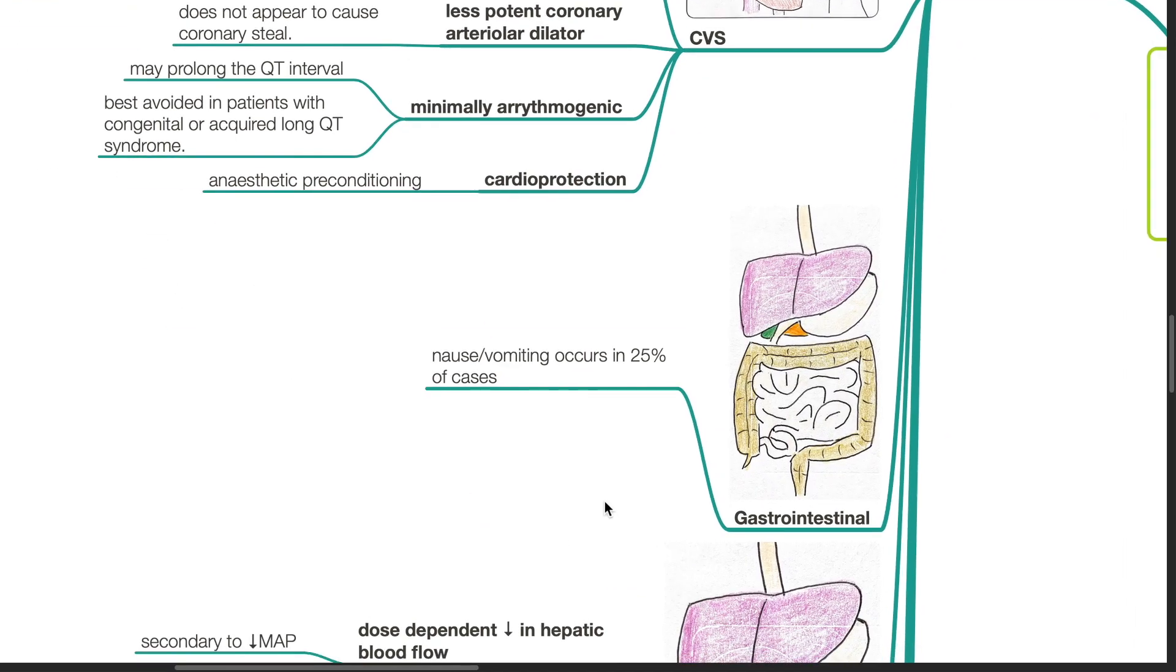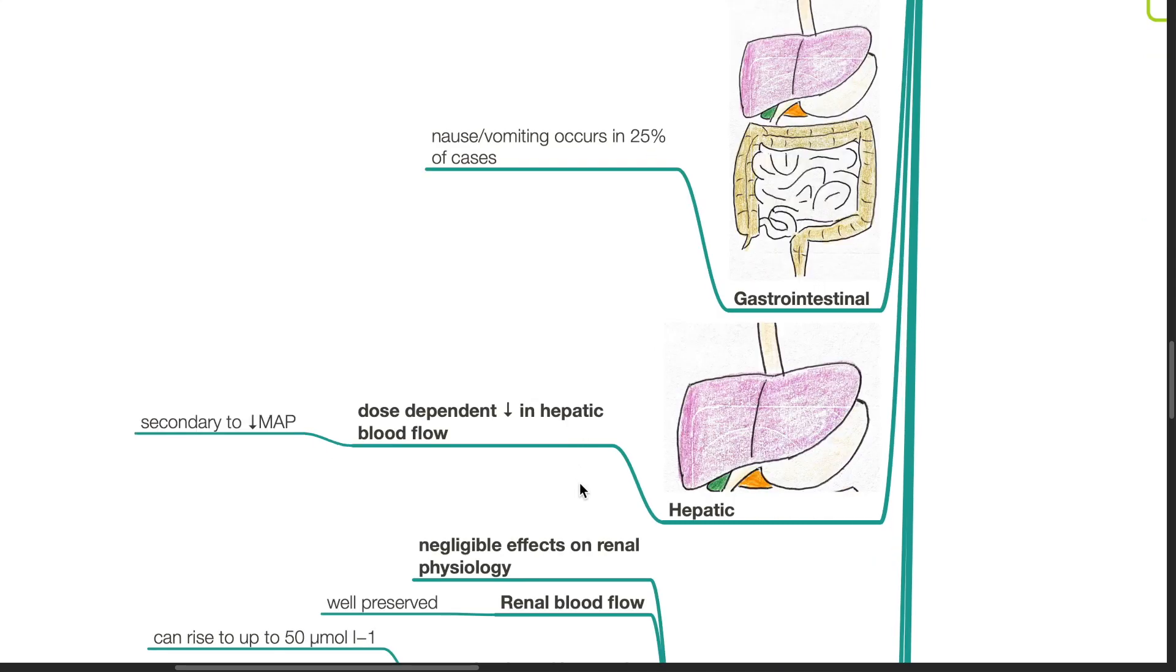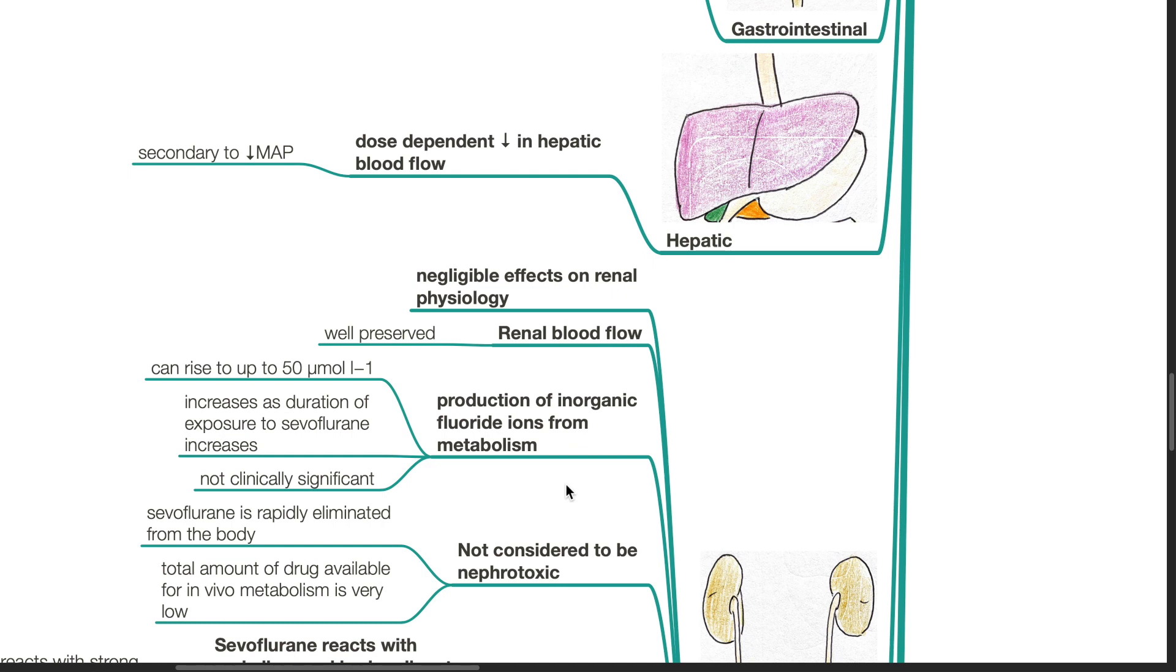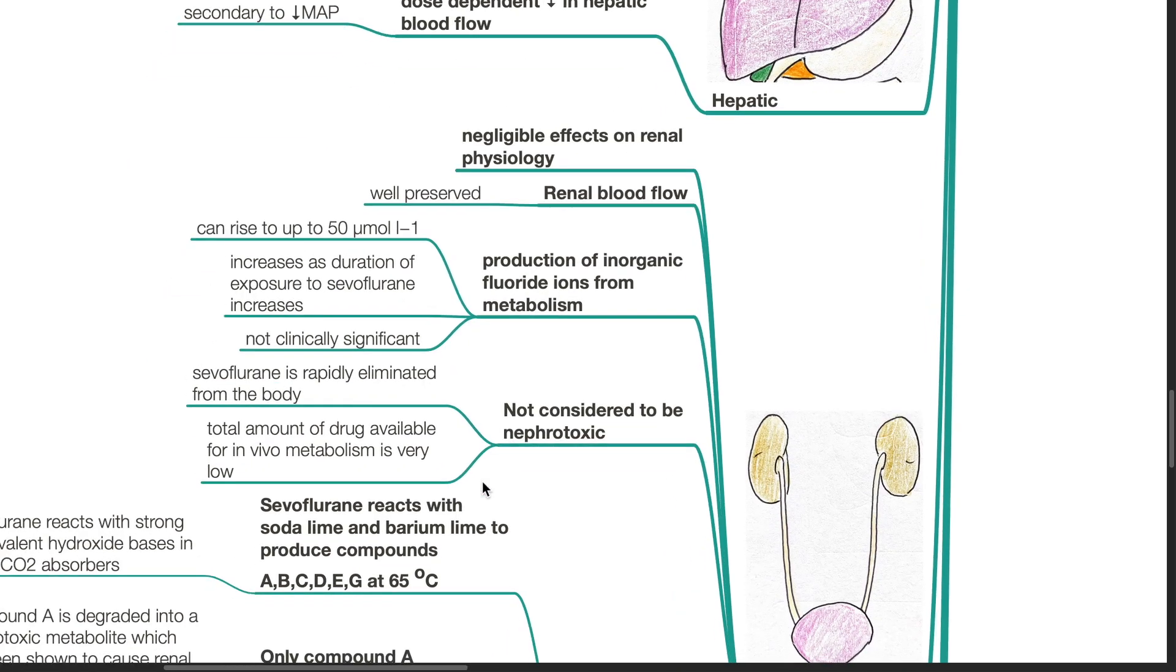Nausea and vomiting occurs in 25% of cases undergoing Sevoflurane anesthesia. There is dose-dependent decrease in hepatic blood flow secondary to decrease in mean arterial pressure. Sevoflurane has negligible effects on renal physiology. Renal blood flow is well preserved. Fluoride ions produced from metabolism of Sevoflurane can rise up to 50 micromoles per liter. It increases as the duration of exposure to Sevoflurane increases. However, this is not clinically significant. Sevoflurane is not considered to be nephrotoxic. It is rapidly eliminated from the body. The total amount of drug available for in vivo metabolism is very low.